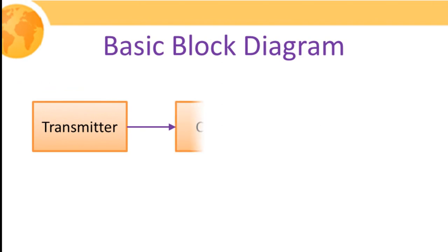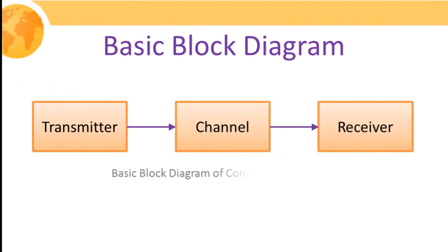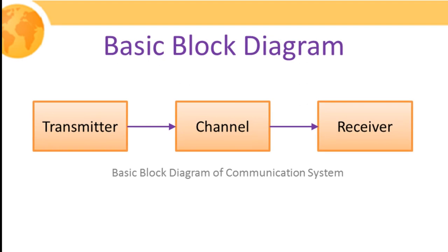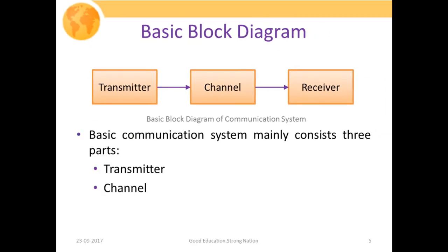The basic block diagram of a communication system has a transmitter, which transmits your message signal, then a receiver to which the transmitter wants to deliver information, and a physical medium or channel connecting them through which the information passes. The basic block diagram mainly consists of three parts: the transmitter, the receiver, and the channel that interconnects them. The channel is nothing but a physical medium through which your signal travels.